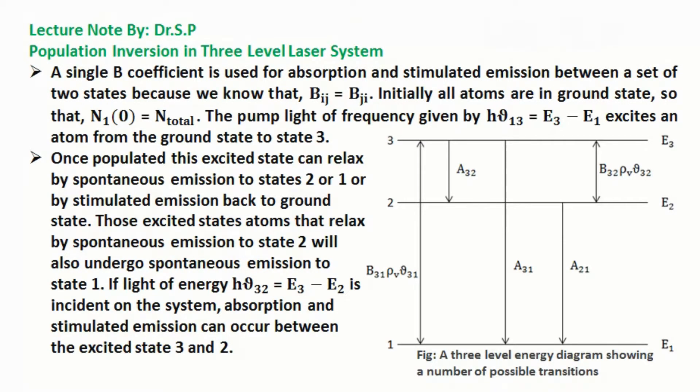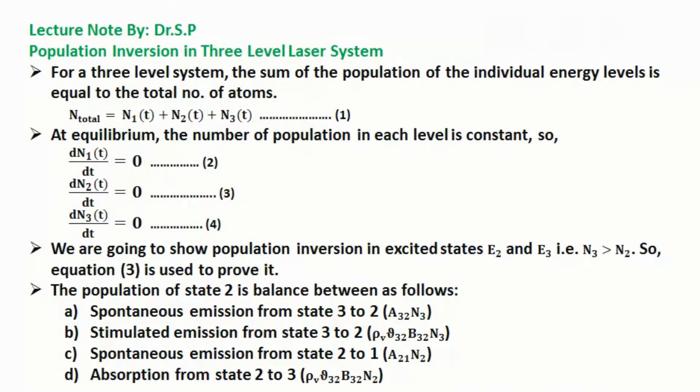absorption and stimulated emission can occur between the excited states 3 and 2. For a three-level system, the sum of the population of the individual energy levels is equal to the total number of atoms. It is clearly shown in equation 1.